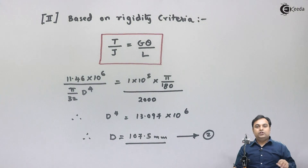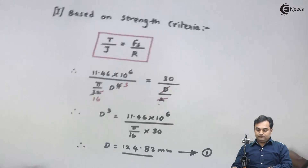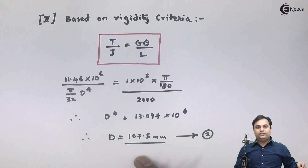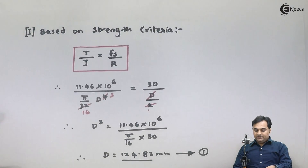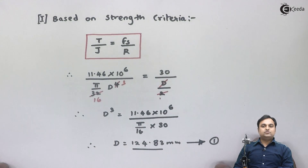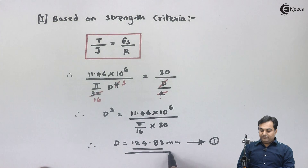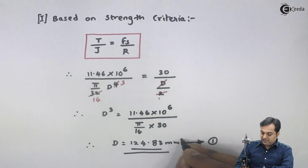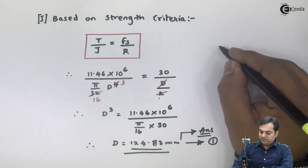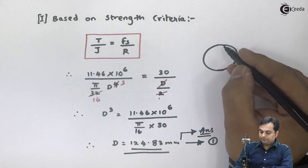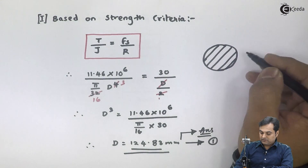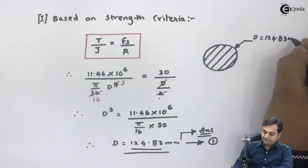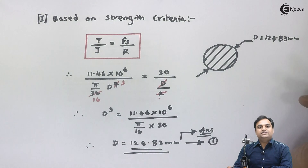Comparing equation one, where diameter is 124.83 mm, and equation two, where diameter is 107.5 mm — the strength criteria gives the larger value. We must select the greater diameter because a larger area causes stress to decrease. Therefore, the final answer for the diameter of the solid shaft is 124.83 mm.